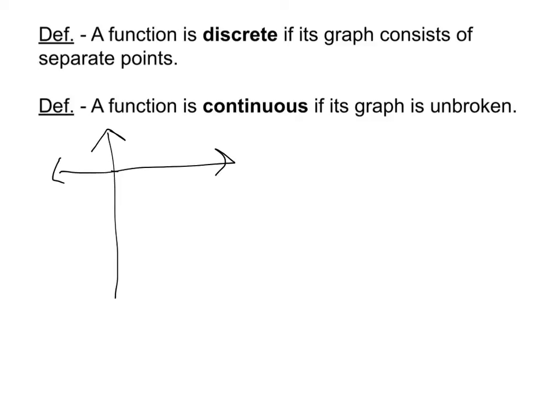So if I had an xy graph like this, and I were to make a relation that was described by these points here, notice there's no continuousness. It doesn't continue smoothly. It's just a bunch of separate points.